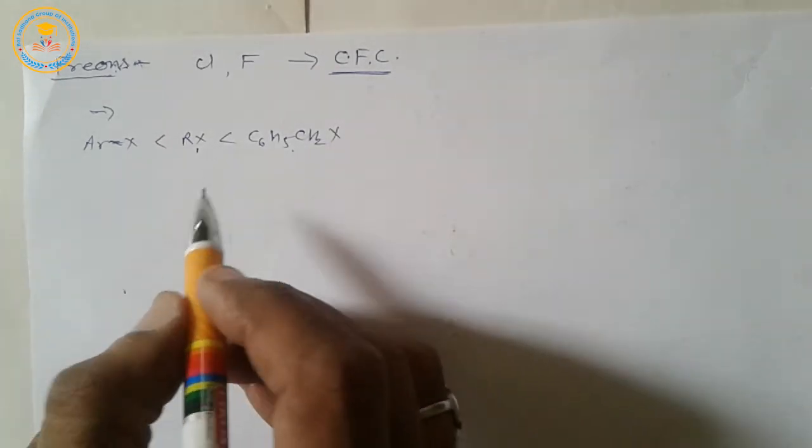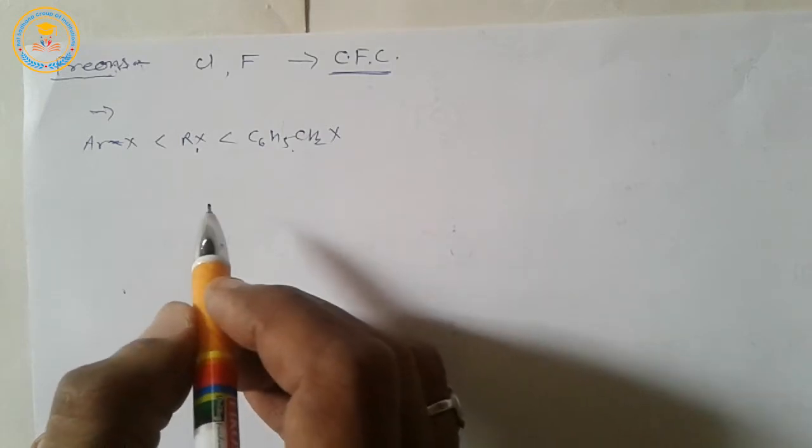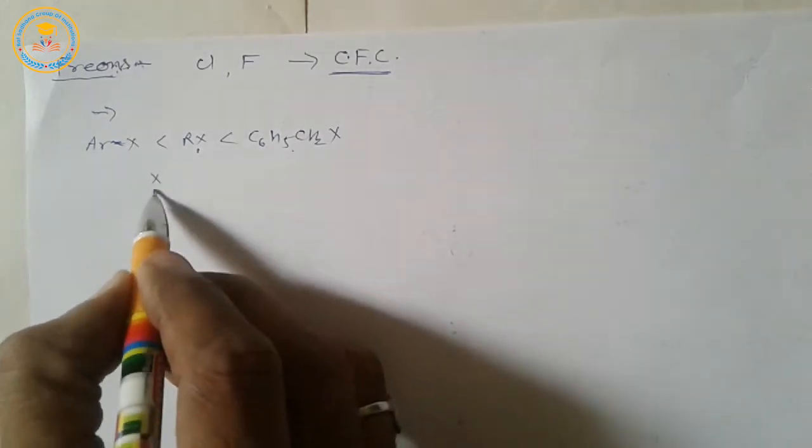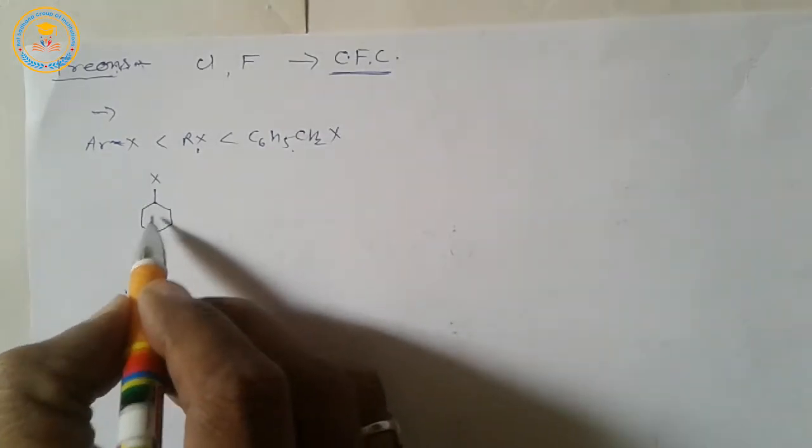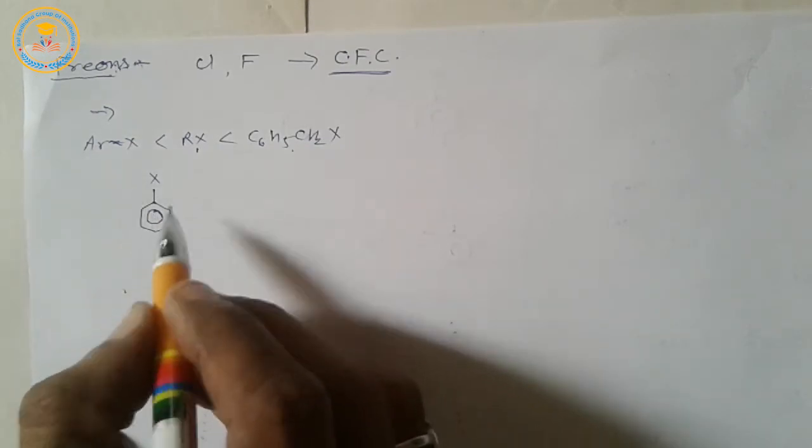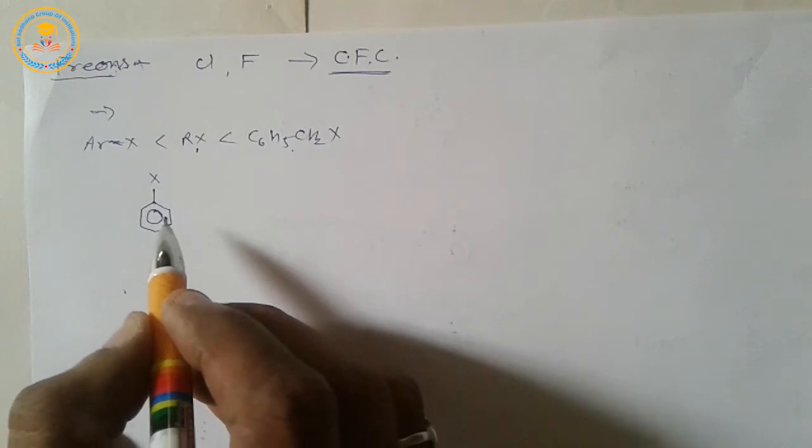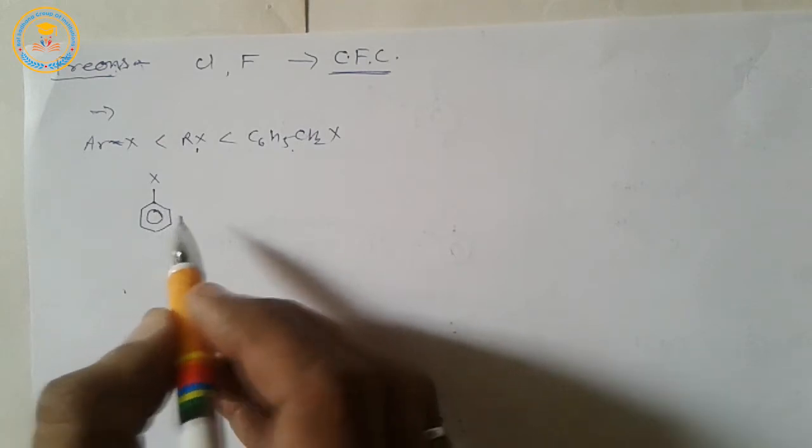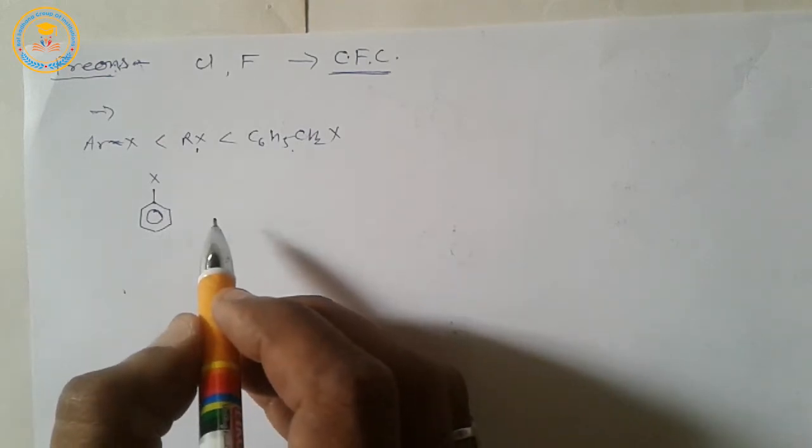If electron withdrawing groups are present at benzene ring in halo-arene molecule, then the reactivity of halo-arene towards SN reaction increases.